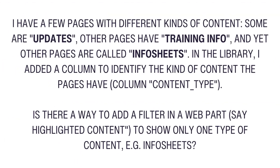The question is: I have a few pages with different kinds of content — some are updates, other pages have training info, and yet other pages are called info sheets. In a document library, I added a column to identify the kind of content the pages have. The column is called content type with a number of choices. Is there a way to add a filter in a web part, say the highlighted content web part, to show only one type of content — for example, info sheets?